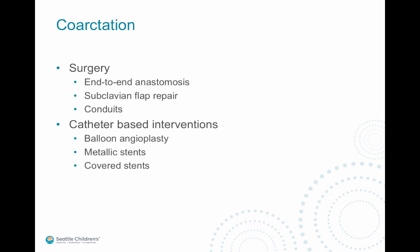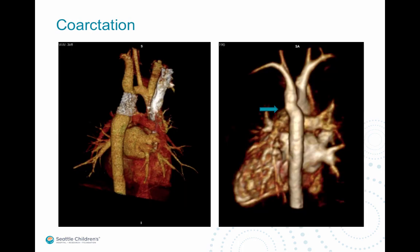Coarctation repair includes end-to-end anastomosis with removal of the short segment coarctation and possibly the ductal tissue as well. Subclavian flap repairs were common historically but not performed as frequently today. There are also conduit placements for long segment coarctation. Catheter-based interventions include balloon angioplasty and placement of metallic stents or covered stents. On the left is a CTA image showing a metallic stent in a patient with coarctation with some post-stenotic dilatation, and on the right is a small pseudoaneurysm on the left lateral wall of the descending aorta.